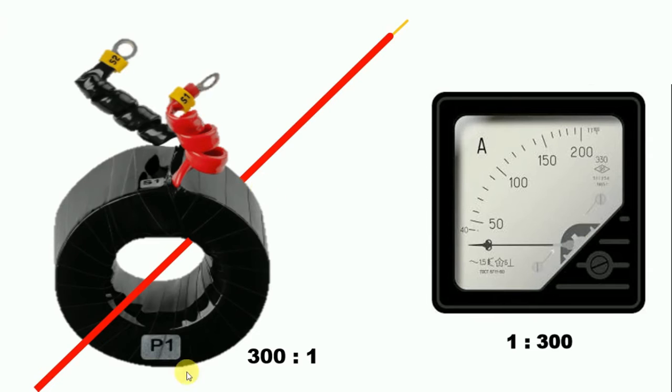That is, the ratio we use for CT, we have to use the same ratio for the ammeter. But here you can see, the CT is 300 by 1 and the ammeter is 1 by 150. So how to connect this ammeter with this CT? Let me explain.